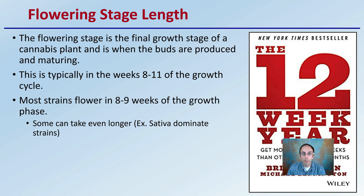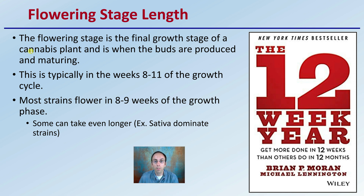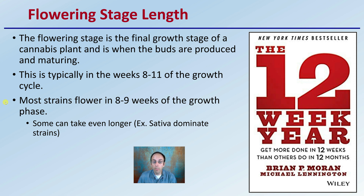The flowering stage is the final growth stage of the cannabis plant and is when the buds are produced and maturing. This is typically in weeks eight to eleven of the growth cycle. Most strains flower in eight to nine weeks of the growth phase. Some can take even longer, particularly those that are sativa dominant strains.